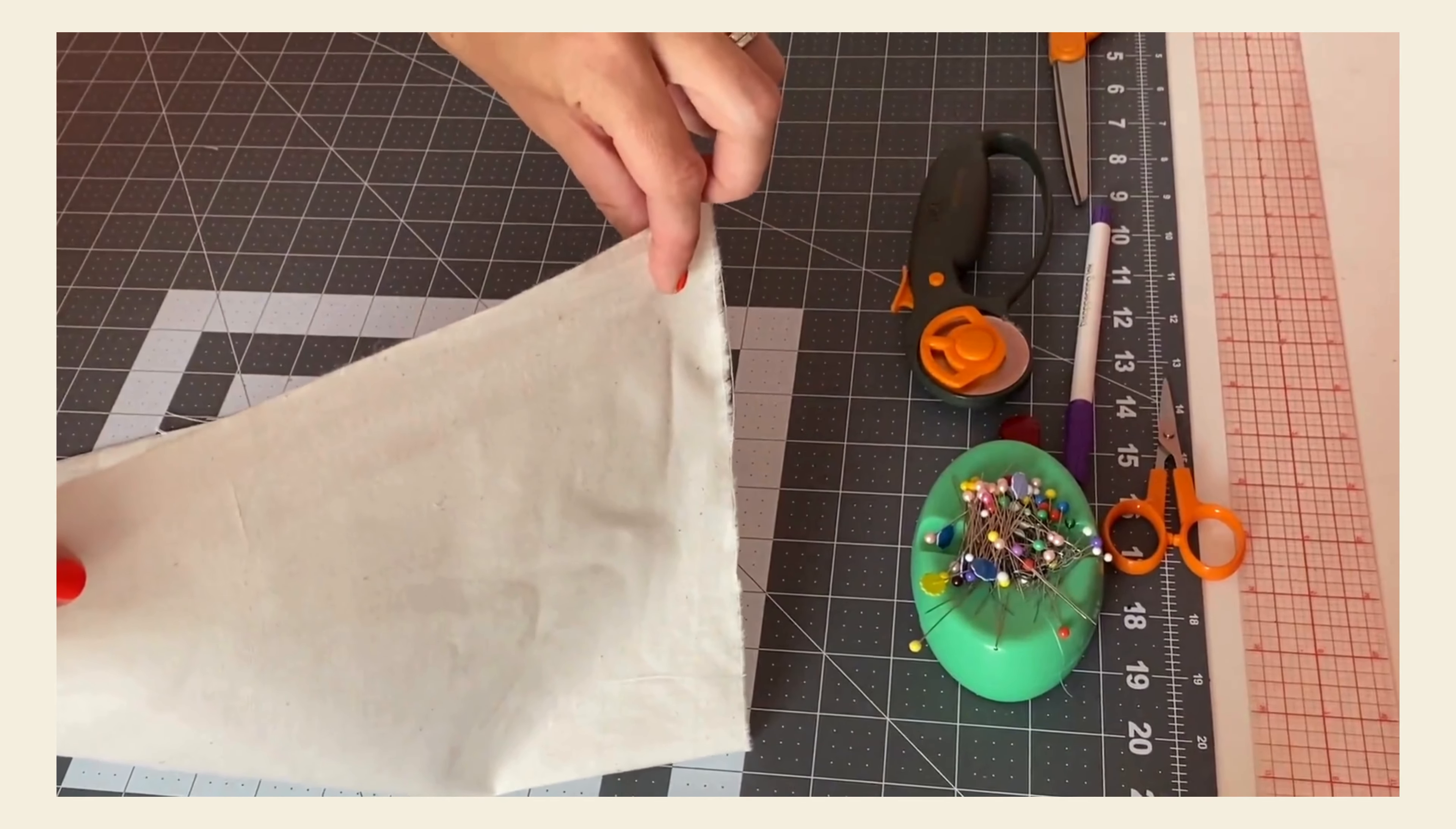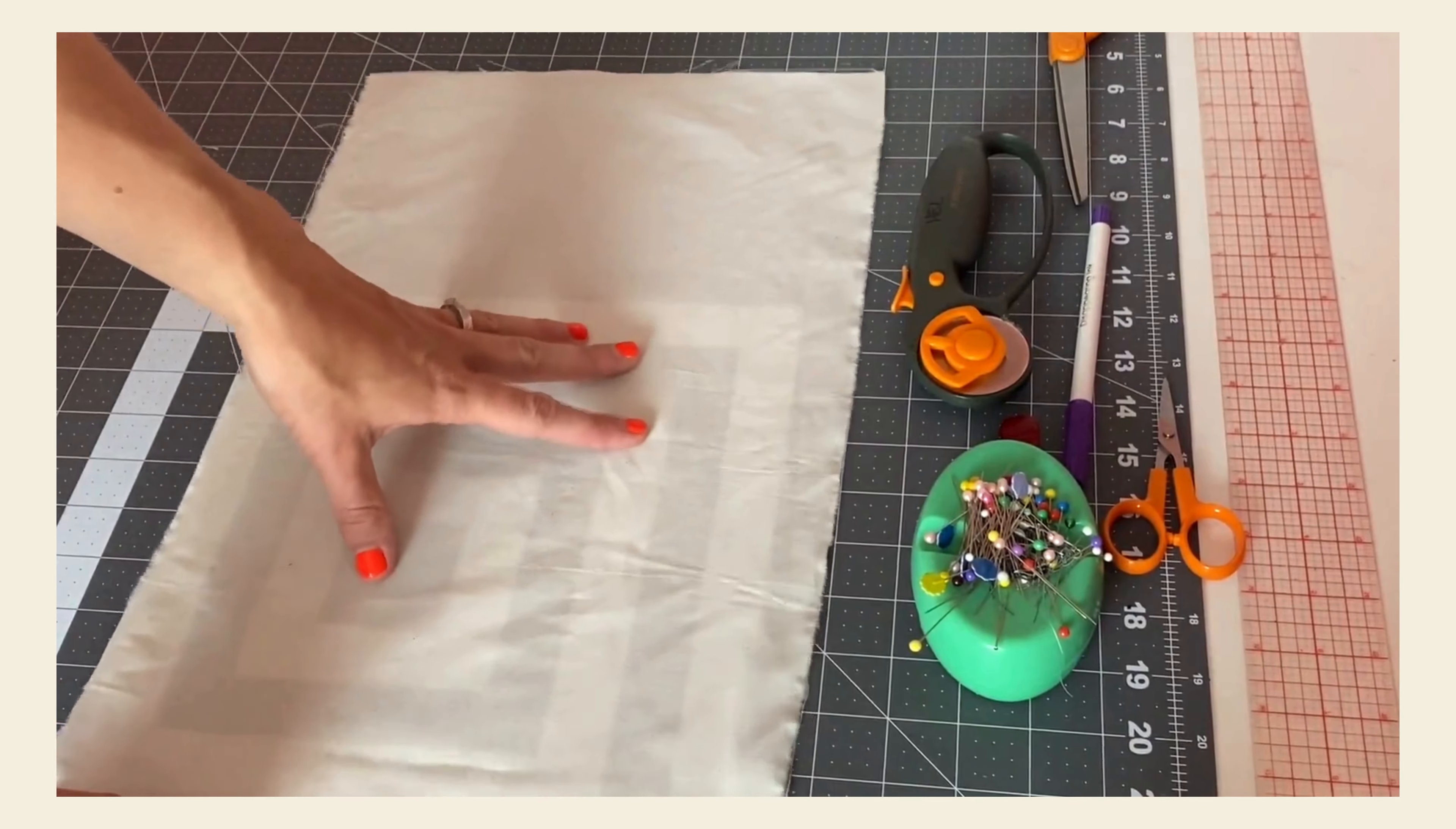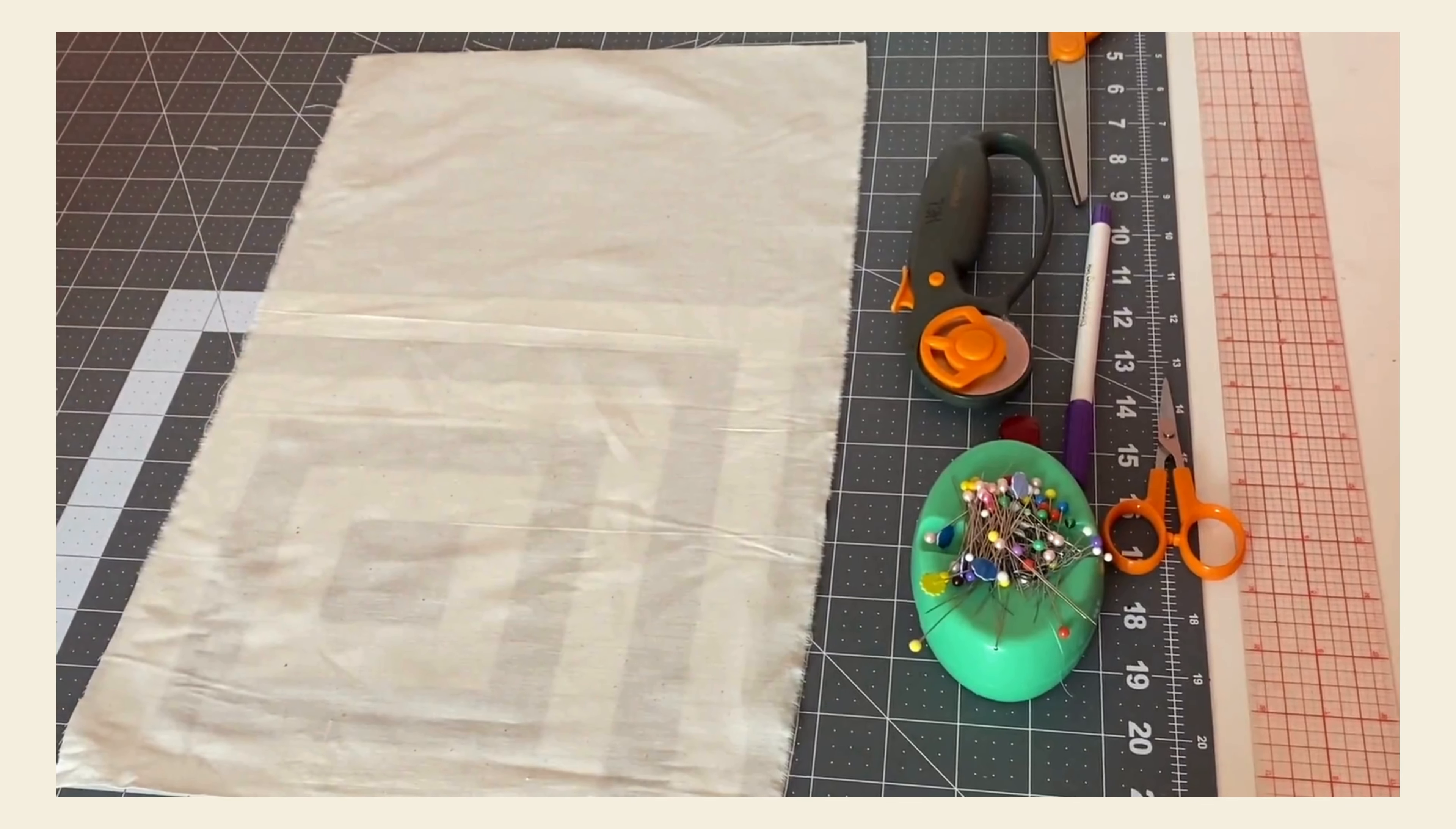Now you might ask, what is a grain line? That's a great question. Each woven fabric is woven together with two grain lines. There is the lengthwise grain line, which runs parallel to the selvedge. That's the finished edge of the fabric.